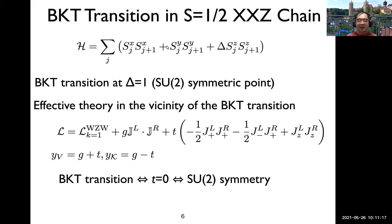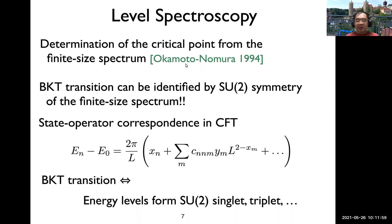It is not coincidence that the BKT transition point at delta equals 1 in this model is SU(2) symmetric. The low-energy effective theory for the BKT transition can be written as a level-1 SU(2) WZW model, where marginal perturbations are written in terms of SU(2) currents. On the transition line, you only have the SU(2) symmetric perturbation. This means that when you are exactly at the BKT transition, the effective model acquires SU(2) symmetry. Okamoto and Nomura proposed that you can use the finite-size spectrum of a 1D quantum system to identify the BKT critical point very precisely.